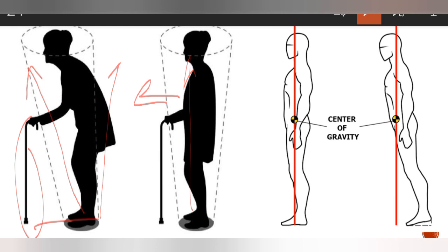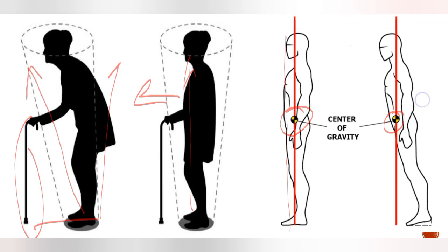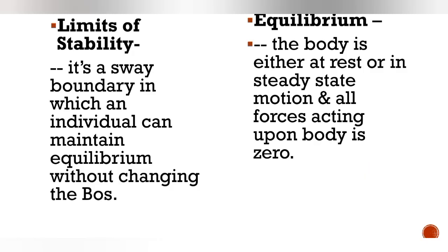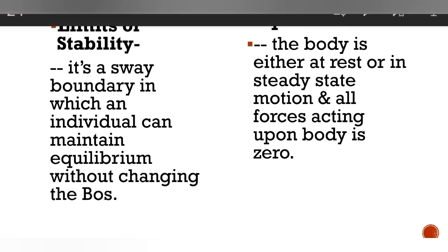What is the equilibrium position? Equilibrium is the center of gravity, which is located in the center of the body at the umbilicus region, in front of the second sacral vertebra. Equilibrium exists either at rest or in steady-state motion, where all forces acting on the body — such as gravitational force and atmospheric pressure — are equal to zero. That state is called equilibrium.